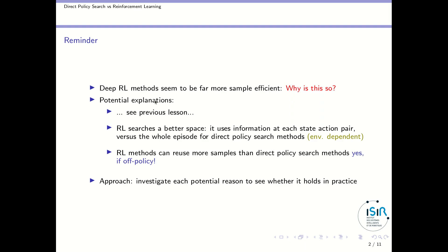In the previous lesson we saw two potential explanations and found they were wrong. Now we study two remaining explanations. It might be the case that reinforcement learning searches in a better space because it uses information at each state-action pair, whereas direct policy search considers the whole episode as a single sample. We will see that this point is environment-dependent, and the second point is that RL methods can reuse more samples — especially when the method is off-policy.